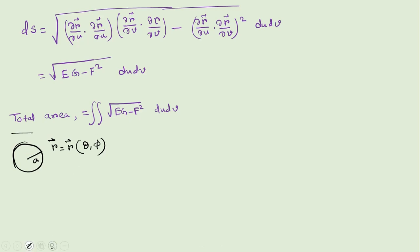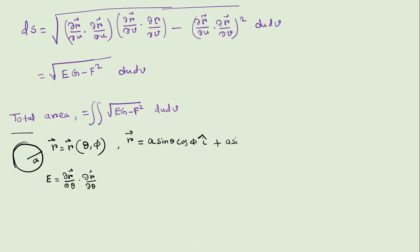We need to find E, G, and F. E = (∂R/∂θ)·(∂R/∂θ). The position vector in spherical polar coordinates is R = a sinθ cosφ î + a sinθ sinφ ĵ + a cosθ k̂. So ∂R/∂θ = a cosθ cosφ î + a cosθ sinφ ĵ − a sinθ k̂, and ∂R/∂φ = −a sinθ sinφ î + a sinθ cosφ ĵ.